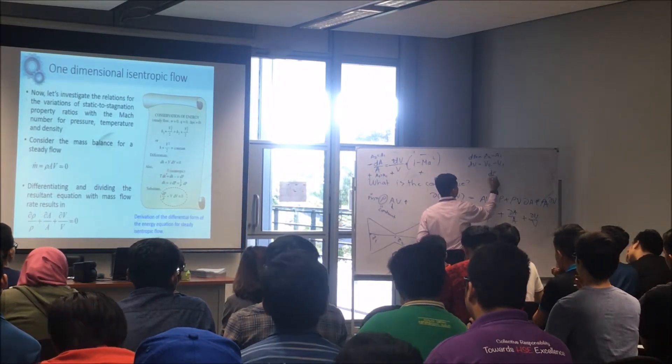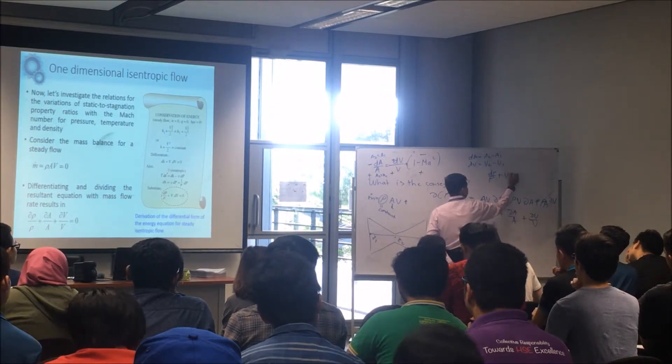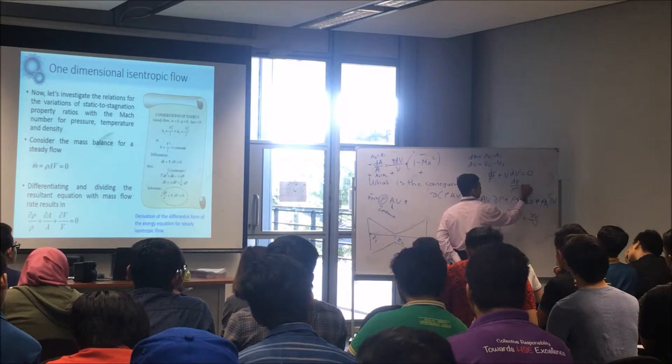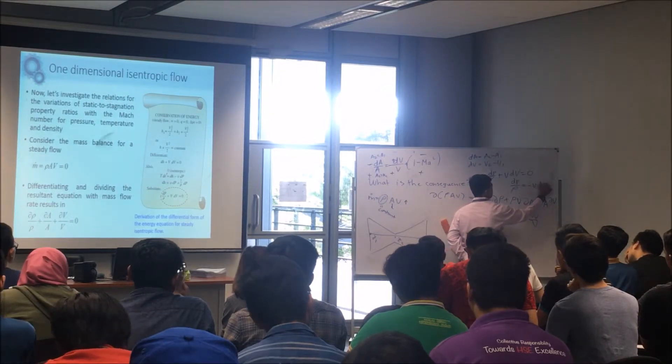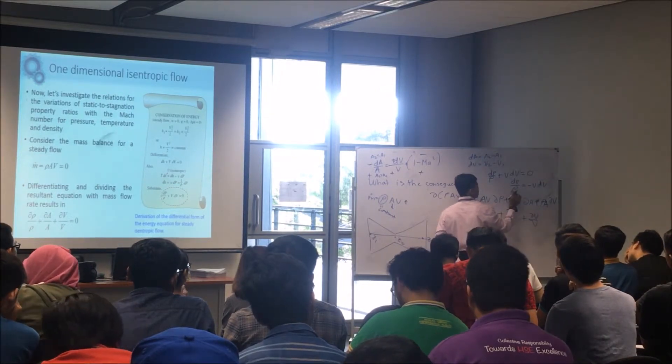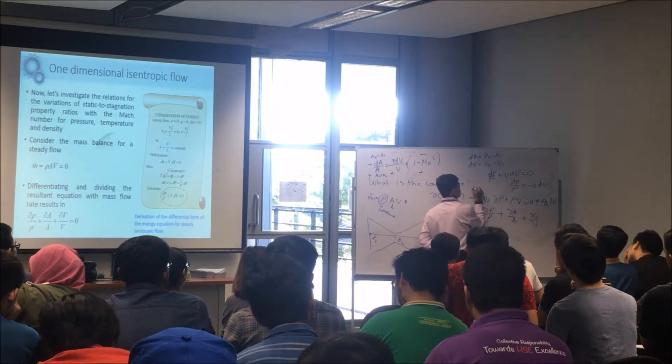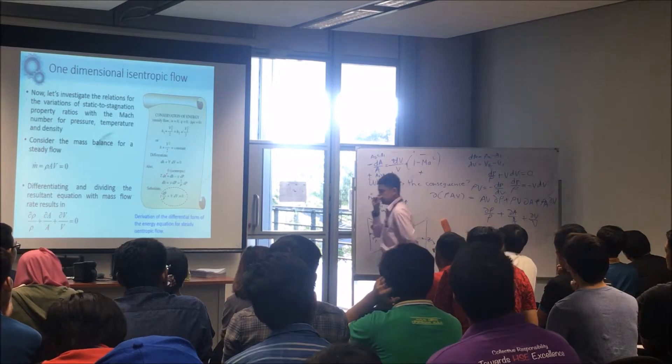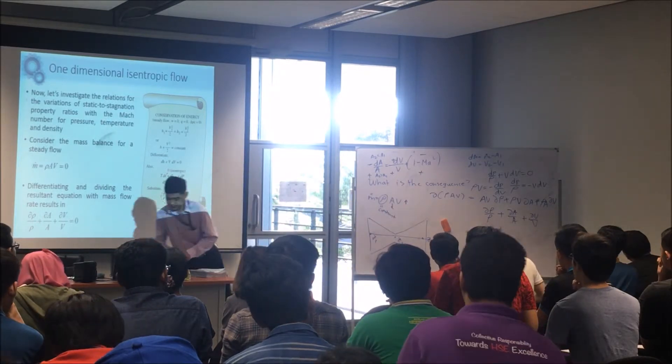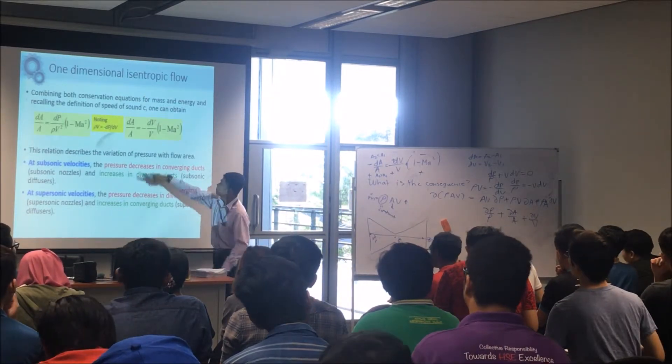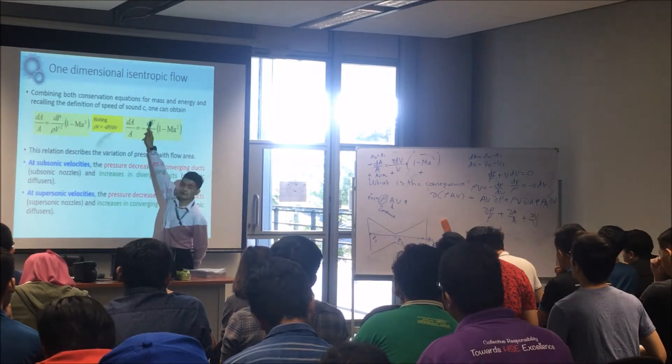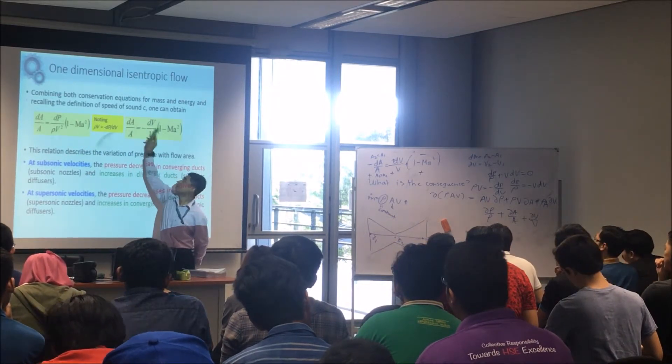We have dP over rho plus V dV, right? So rho V dV minus dP - remove it then becomes rho V dV equals dP. You replace to get the final form.